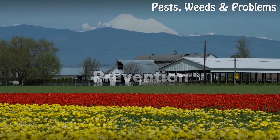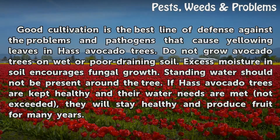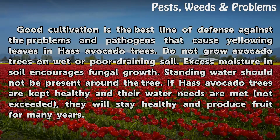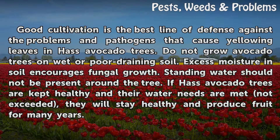Prevention: Good cultivation is the best line of defense against the problems and pathogens that cause yellowing leaves in Hass avocado trees. Do not grow avocado trees on wet or poor draining soil. Excess moisture in soil encourages fungal growth. Standing water should not be present around the tree.